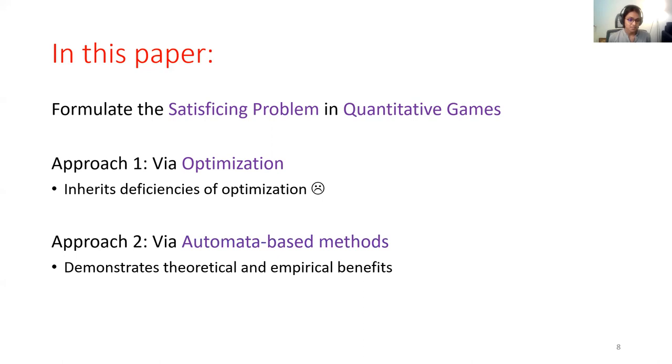And in this approach, we do not use optimization at all. Instead, we use methods based on automata only. And through this, we are able to show several benefits of satisficing, both on the theoretical and the empirical front. Therefore, overall, we are able to show that satisficing is indeed an able alternative to optimization in quantitative games.